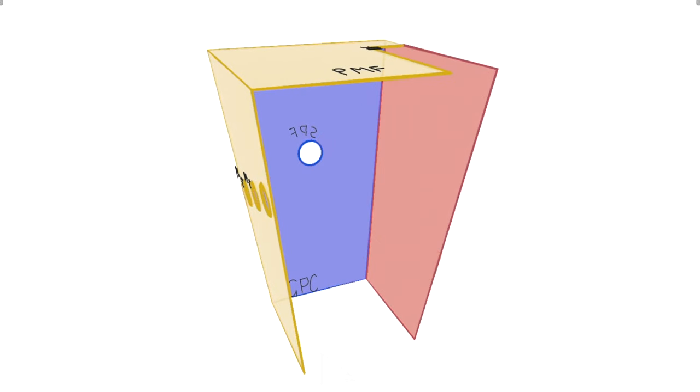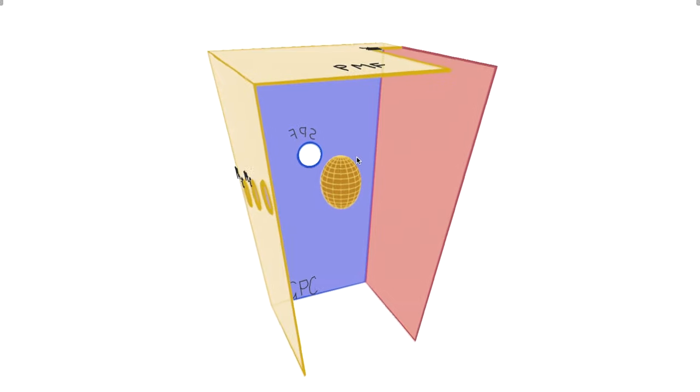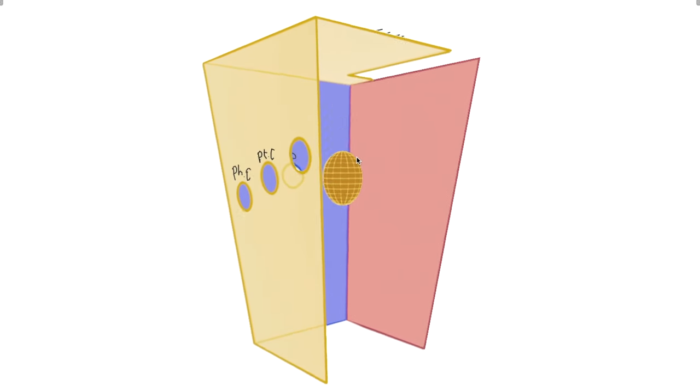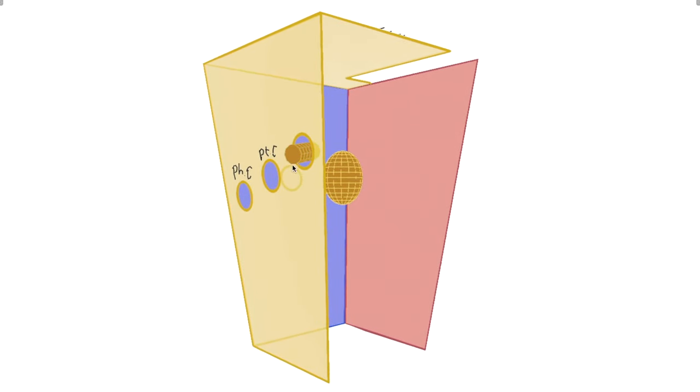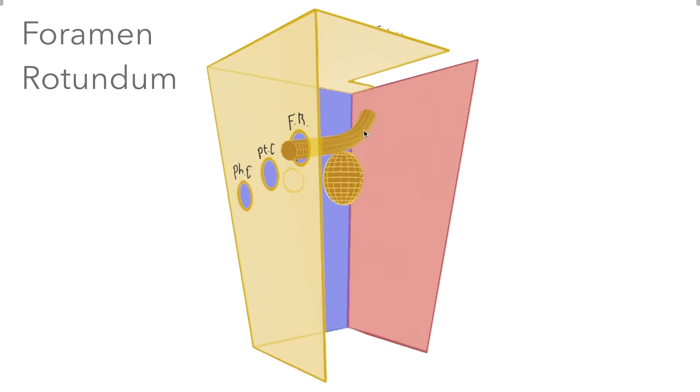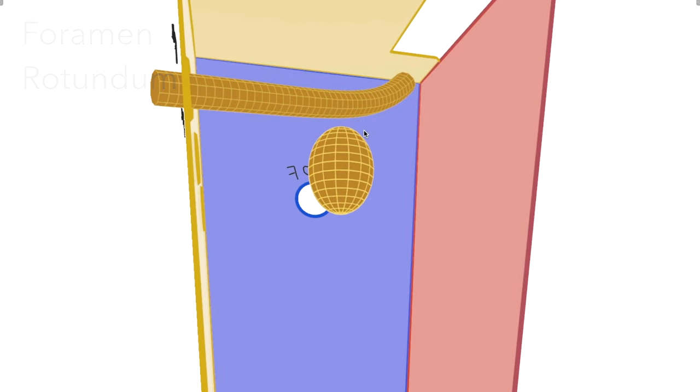Next, let's discuss the relevant nerves. Each of these nerves relate to this pterygopalatine ganglion roughly in the centre here. The largest of these nerves is the maxillary division of the trigeminal nerve which enters the space through the foramen rotundum. These two are connected by so-called pterygopalatine branches.